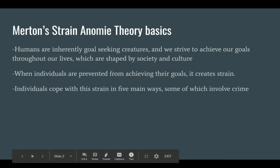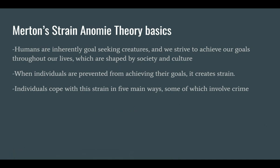Before we begin talking about the modes, a little context is required. Merton's strain theory focuses on the idea that humans are inherently goal-seeking creatures. We strive to achieve our goals, sometimes legitimately, sometimes illegitimately. When we're prevented from achieving our goals, we experience a strain and cope with that in five different methods, some of which involve crime, others don't.